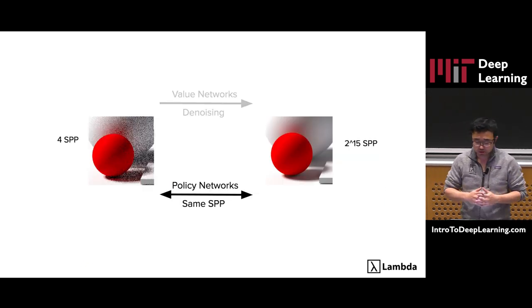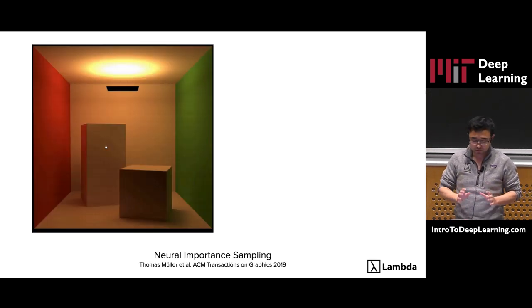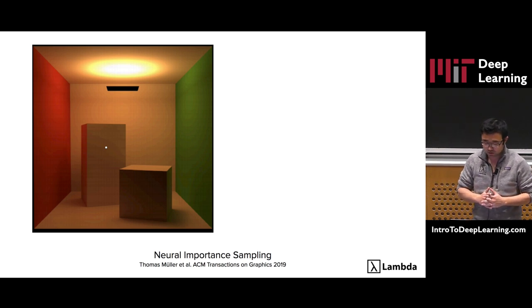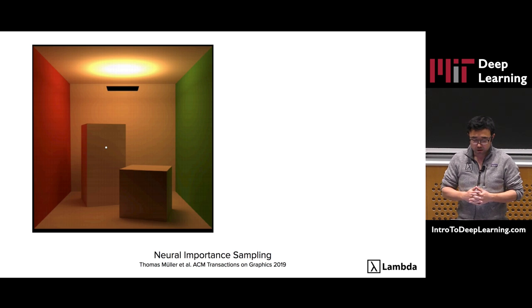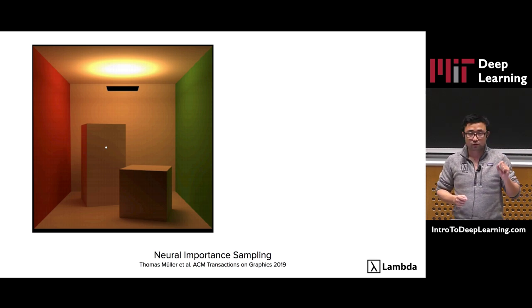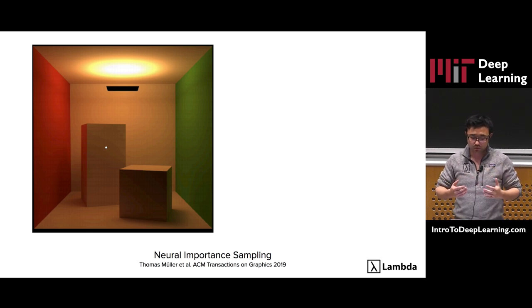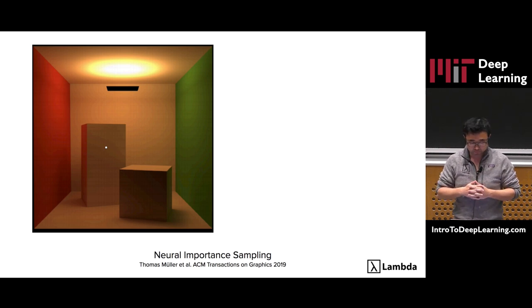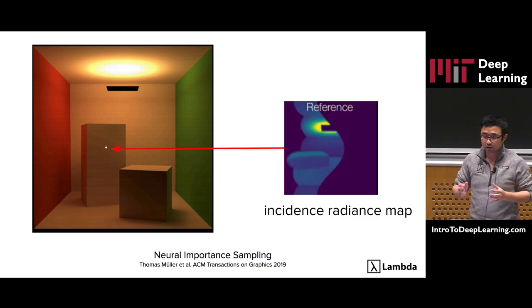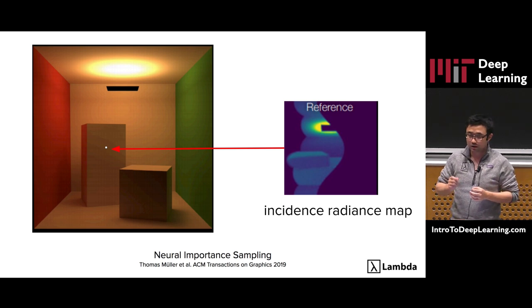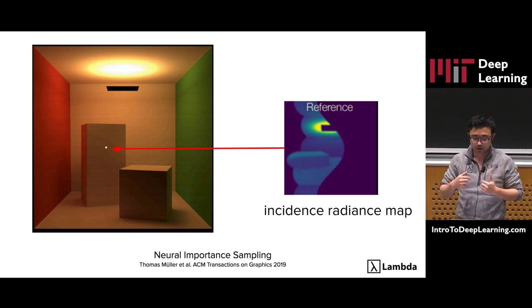Now let's move on to the policy-based approach. I'm not going to cover the entire literature here, but I just want to point you to a very recent work from Disney Research called Neural Importance Sampling. The idea is we want to find for each location in the scene a very good policy that can help us sample rays smartly and reduce the convergence time. In practice, the best possible policy is the incident radiance map at that point, because it literally tells you where the light comes from.